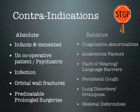Orbital wall fractures are also an absolute contraindication — your needle can enter into fractured places and cause further damage. Predictably prolonged surgeries are better managed with general anesthesia rather than local anesthesia. Relative contraindications include any coagulation abnormality; if you were to puncture a vessel, it would lead to a retrobulbar hemorrhage.